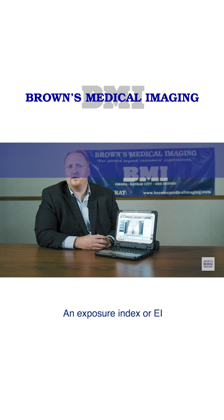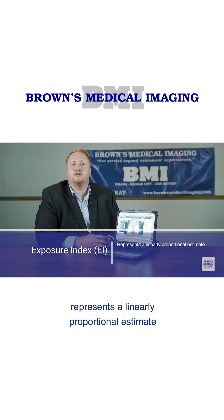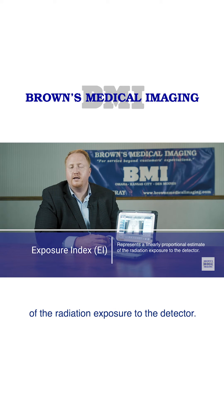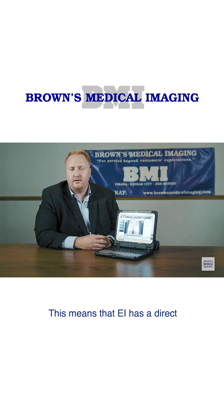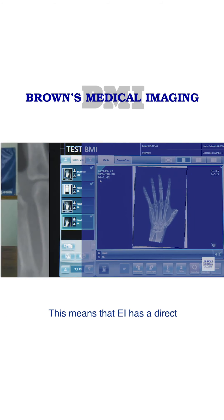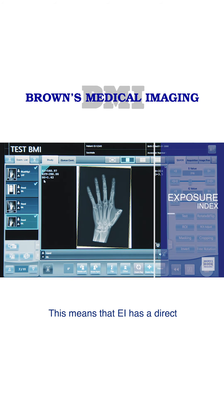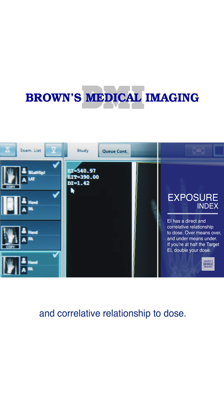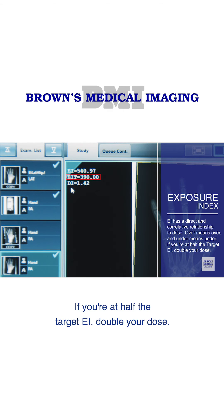An exposure index, or EI, represents a linearly proportional estimate of the radiation exposure to the detector. This means that EI has a direct and correlative relationship to dose — over means over, and under means under. If you're at half the target EI, double your dose. Simple.